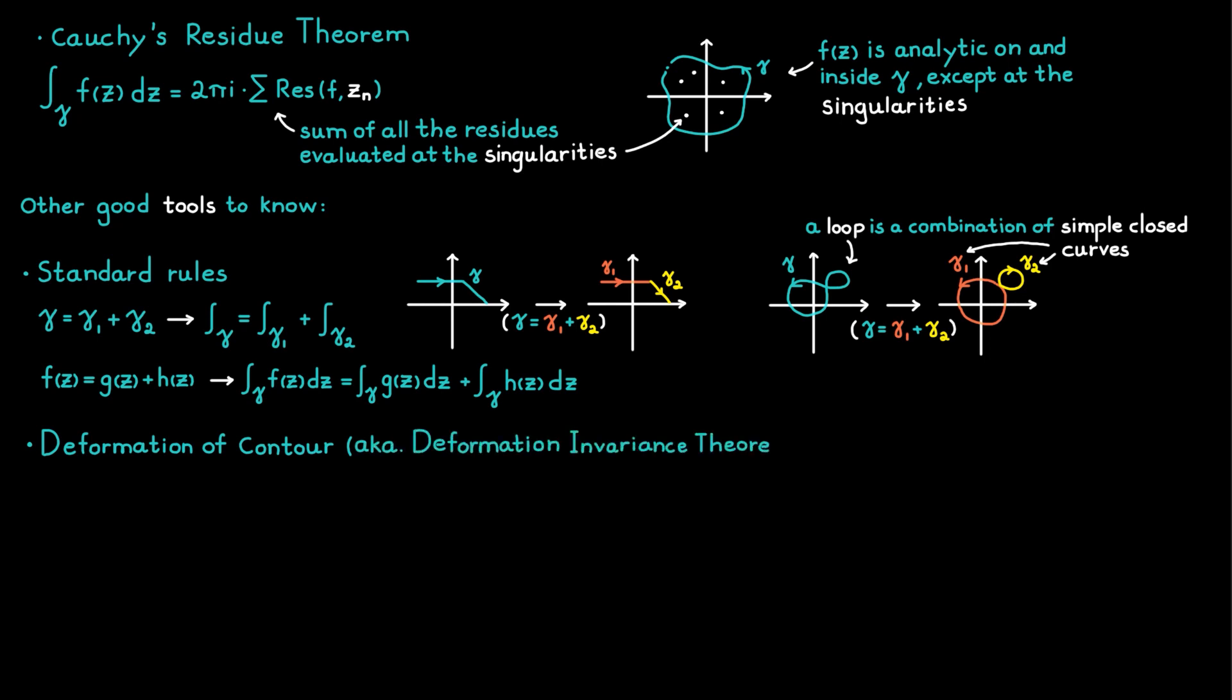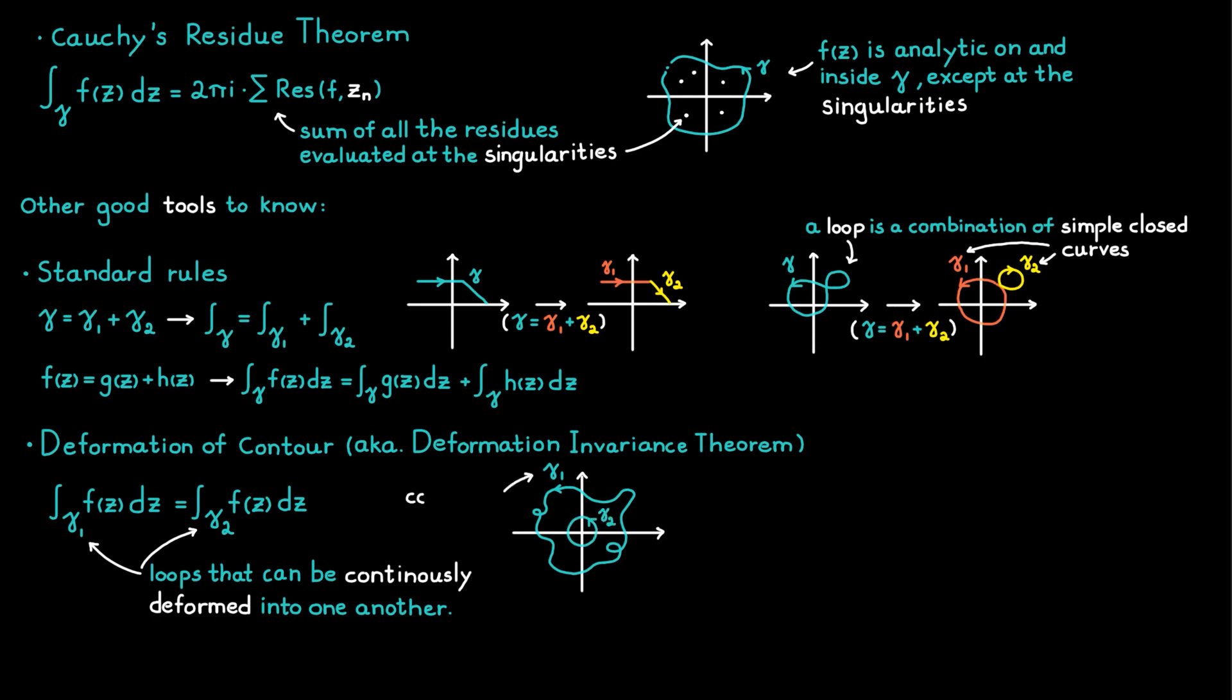This theorem only works when you are dealing with loops, but it tells us that two integrals are equal if the loops can be continuously deformed into one another. This is really useful when you are dealing with some complicated contour, since then you can just deform it into something more manageable and then solve the integral along that contour instead.